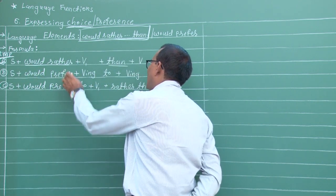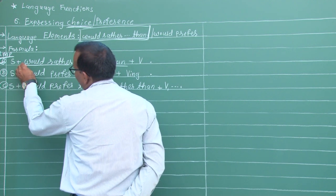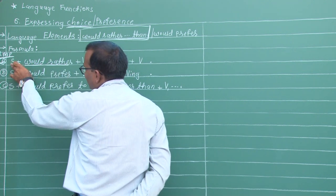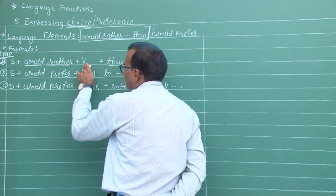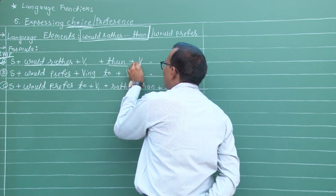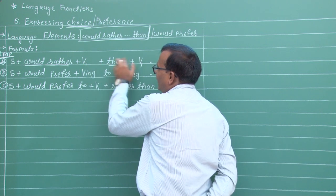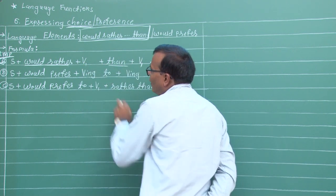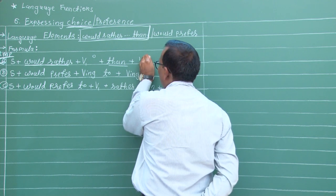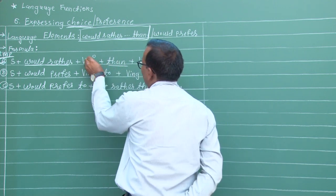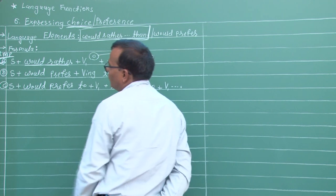સમય આ પ્રકારનાં વાક્ય આપ્યા જોવા મળે છે. તો Subject + Would Rather + verb (plain form) + Than + verb - Would પછી verb આવે, Then પછી પણ verb જ આવે. આગળ-પાછળ verb હોય. જ્યારે object આપવામાં આવ્યો હોય, ત્યારે object સાથે સરખામણી થતી હોય.